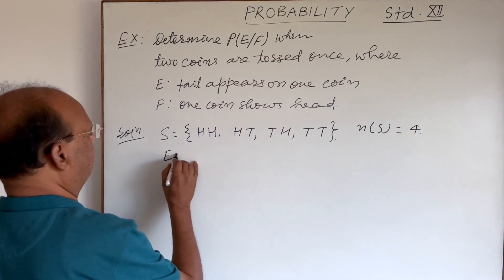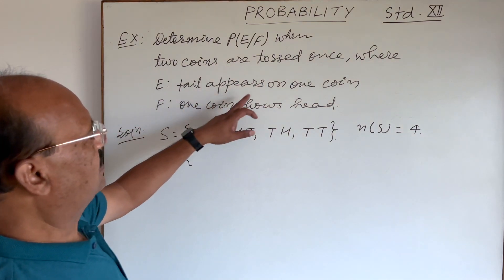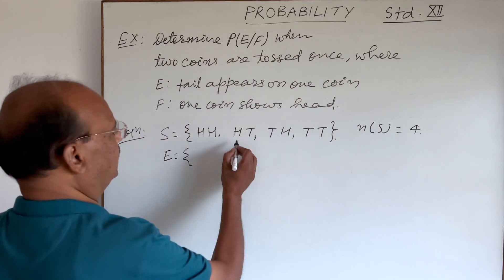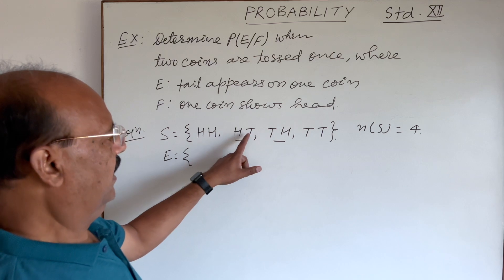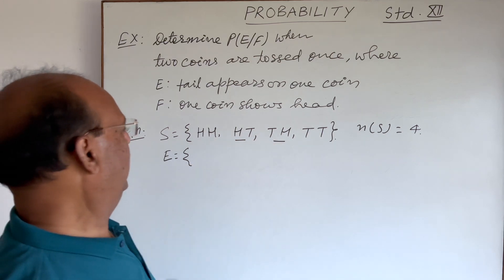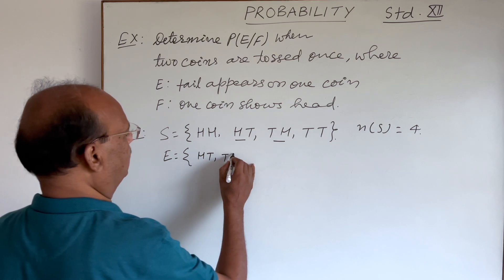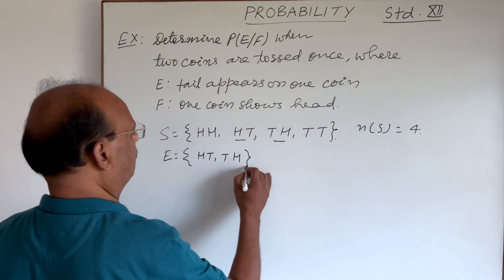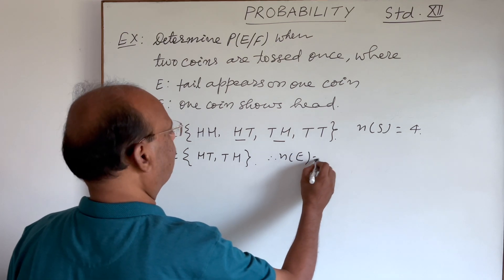And right here, event E, what will be elements here? Tail appears on one coin. So these are the cases where tail appears on one coin. These are HT and TH. So n(E) is equal to here, 2.